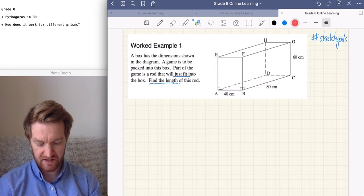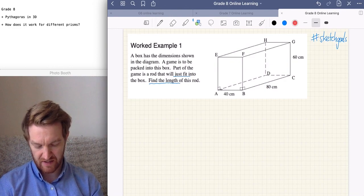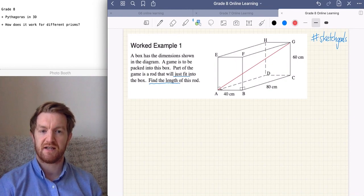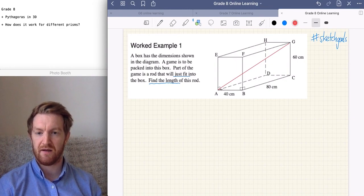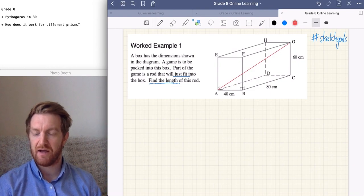So to show you what that looks like, I'm just going to draw a little line in red. Basically, it's saying if we were to draw a line of the rod going from A to G, something like that, it's asking how long would that line be? So it's kind of going diagonally in three dimensions through the box, from the bottom left to the top right.